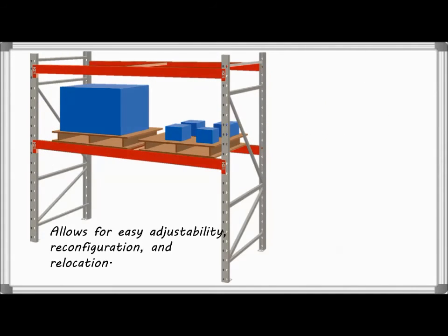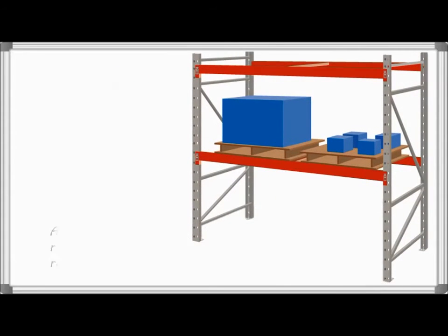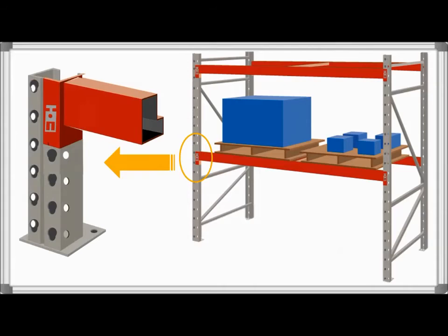Roll form rack is highly adaptable and allows for easy adjustability, reconfiguration, and relocation. Roll form rack is most commonly manufactured as teardrop style, as seen here. Roll form beams are completely closed and uprights are formed as C channels, which is only slightly open in the back. Beams are attached to uprights by inserting their corresponding teardrop shaped connectors into the upright teardrop shaped holes and secured with safety locks.